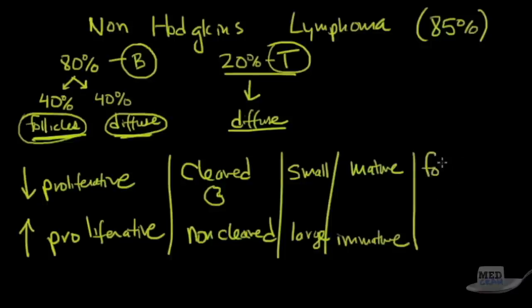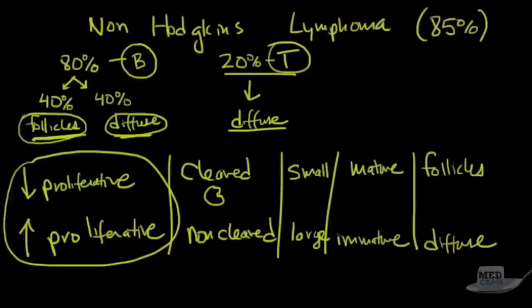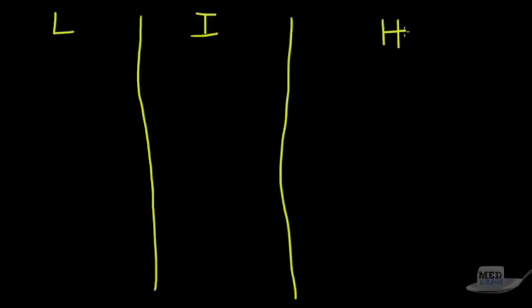We talked about follicles versus diffuse. Just looking at the different types of lymphomas, these are important because we'll describe lymphomas with these words to see if it's small cleaved or small non-cleaved or mature with follicles. All of this boils down to how aggressive the lymphoma will be, which is important for prognosis. Let's divide non-Hodgkin's lymphoma into different grades: low grade, intermediate grade, and high grade.